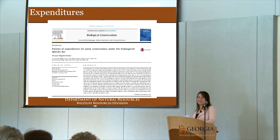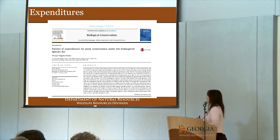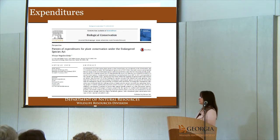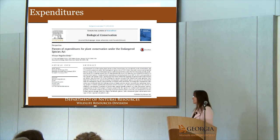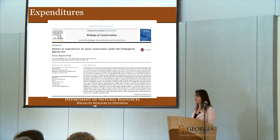A peer-reviewed paper by Dr. Vivian Ortiz raises the point about expenditures for listed plants. She points out that the majority of listed species are plants, but they receive only less than 5% of the recovery funding from federal and state agencies. There are 900 listed plants and 700 listed animal species — plants make up 56% of the list but receive less than 5% of the recovery funding.